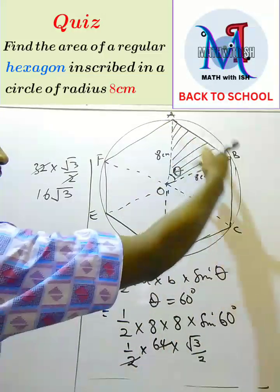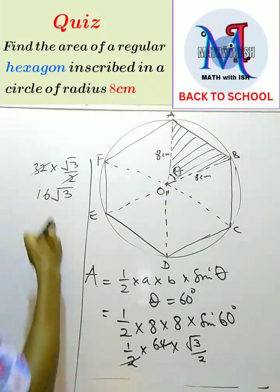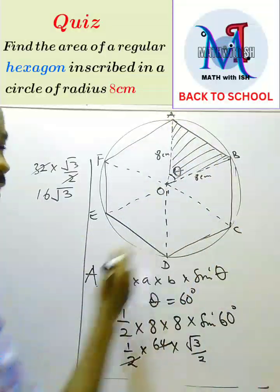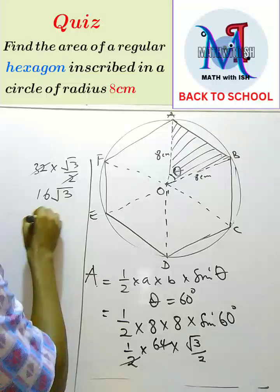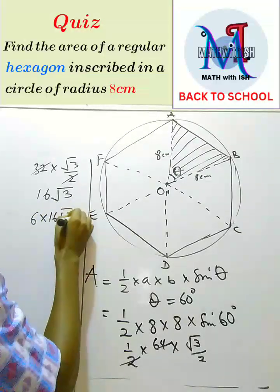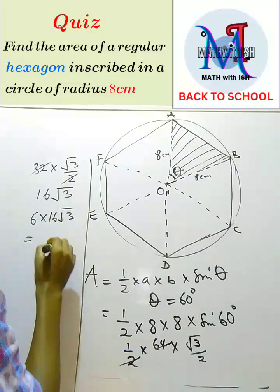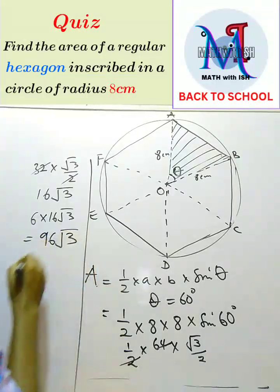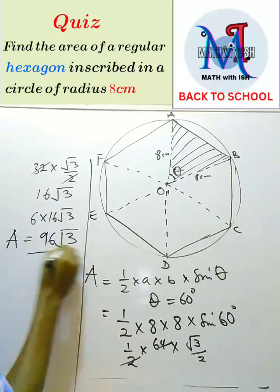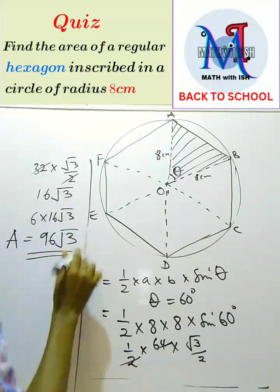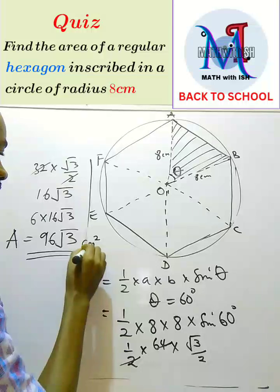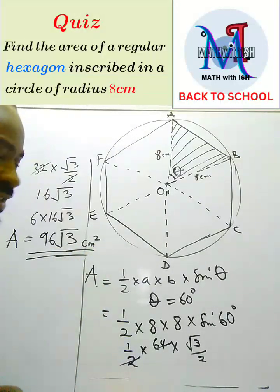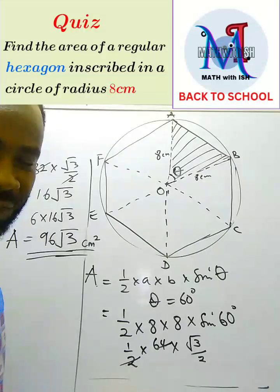Now since this is the area of this triangle, and there are six of them, it means that we're going to have 6 times 16√3, and that gives us 96√3. So the area of this hexagon is 96√3 centimeters squared.